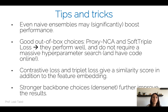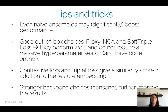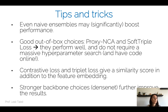Note that contrastive and triplet losses provide a similarity score in addition to the feature embedding, while a classification loss only gives the feature embedding for nearest-neighbor search. The triplet loss directly gives a similarity score. And of course, stronger backbones such as DenseNet will yield stronger results.